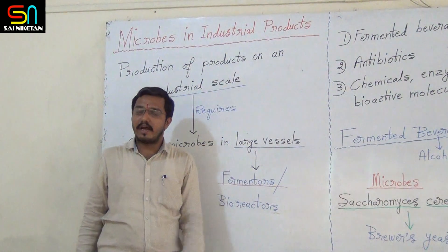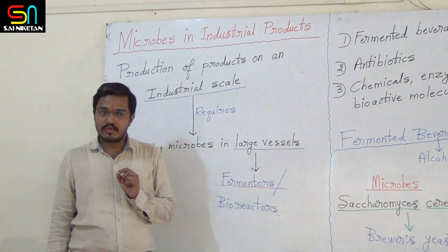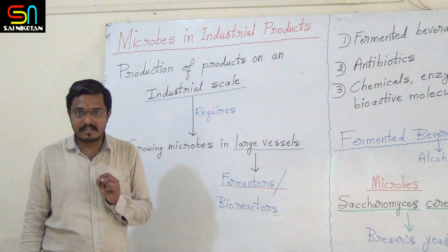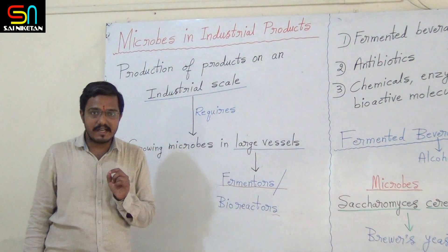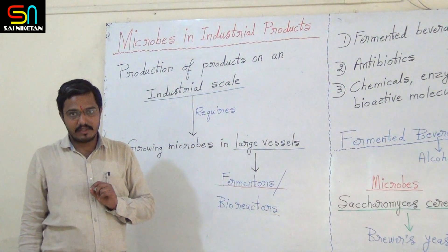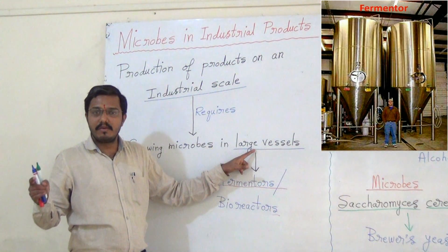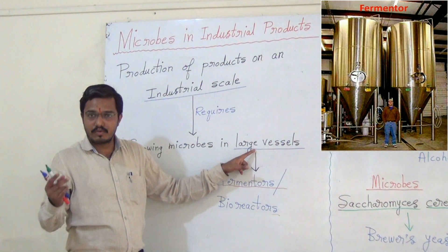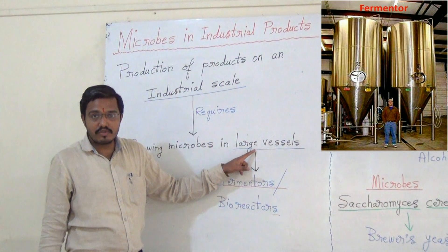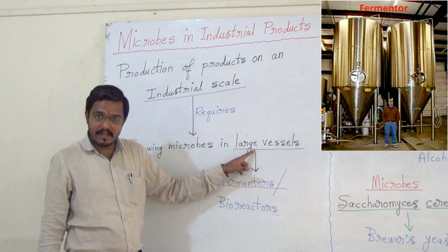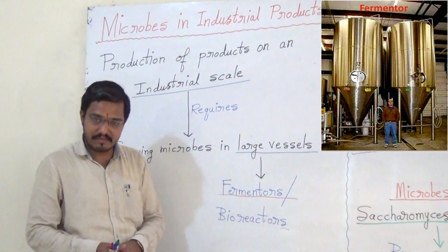Before that, you should know one thing. We are going to produce products on an industrial scale. Therefore, to grow the microbes at industrial scale, it requires very large vessels — very, very big vessels. Those vessels used to grow the microbes in industry are called fermenters. This is the first thing you should know.